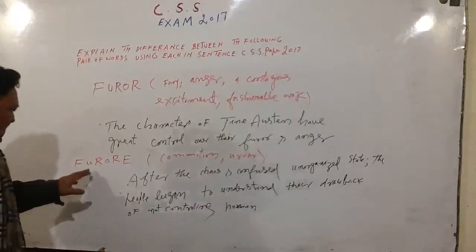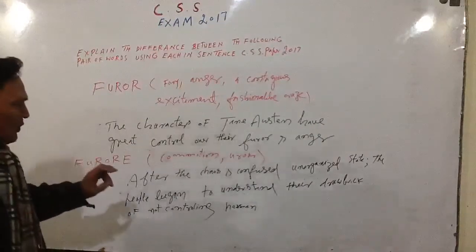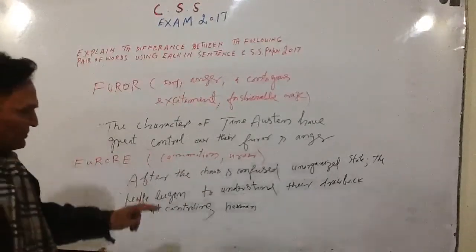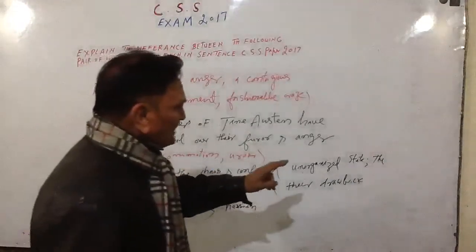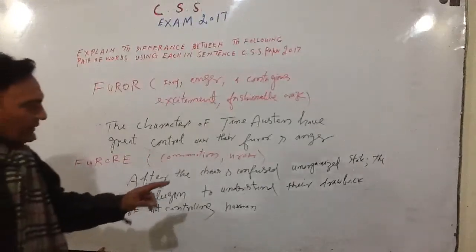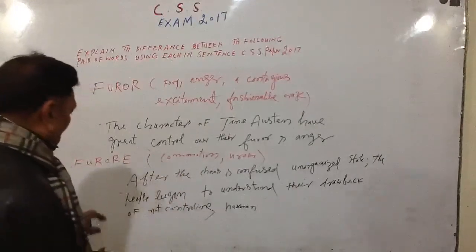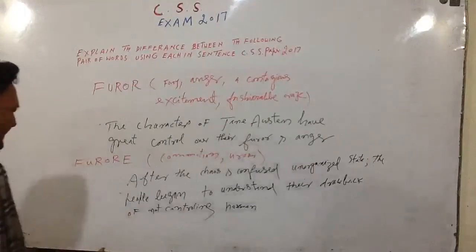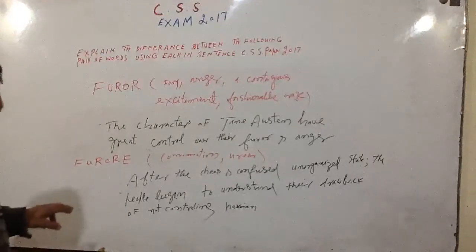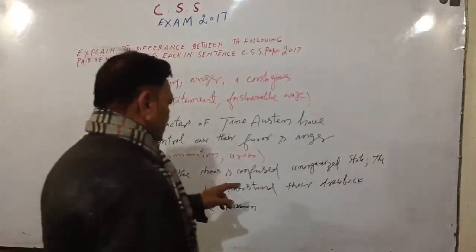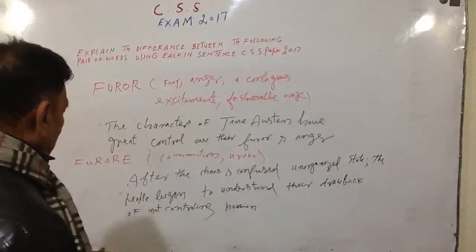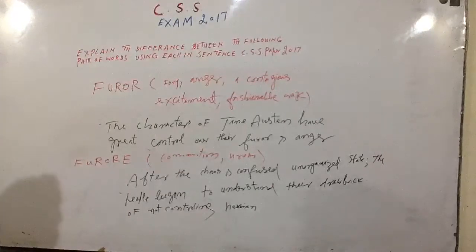The second one is f-u-r-o-r-e, 'furore', meaning commotion or uproar. Example sentence: 'After the chaos and confused, unorganized state, the people began to understand their drawback of not controlling passion.' After the chaos and confused unorganized state, the people began to understand their drawback of not controlling passion.